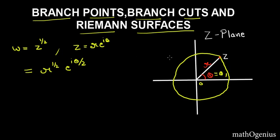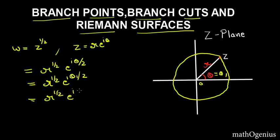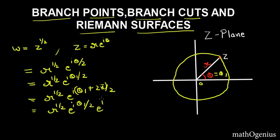So let's do this. We write θ = θ₁ for the first point, giving R^(1/2) · e^(iθ₁/2). Now after one full rotation around the origin, θ becomes θ₁ + 2π. So we get R^(1/2) · e^(i(θ₁ + 2π)/2) = R^(1/2) · e^(iθ₁/2) · e^(iπ). Since e^(iπ) = −1, we get −R^(1/2) · e^(iθ₁/2).